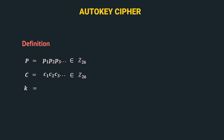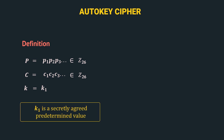Now let's look at the key. The first character is k1. k1 is a secretly agreed predetermined value which is agreed by both Alice and Bob before encryption and decryption. Alice and Bob fix on a value k1 which is known to both of them. The key stream starts with this k1 value. The next value is p1, the first character of the plain text, followed by p2, p3, and so on. So in the key stream, we start with k1 and then append the plain text to this k1.